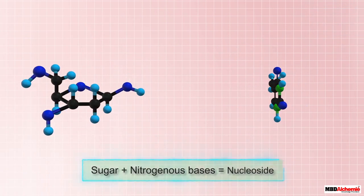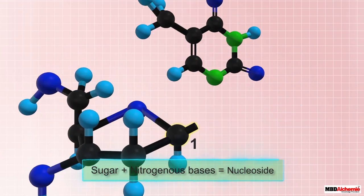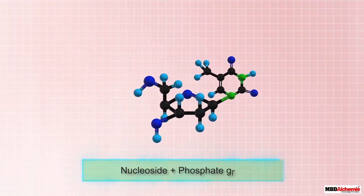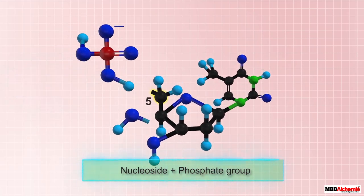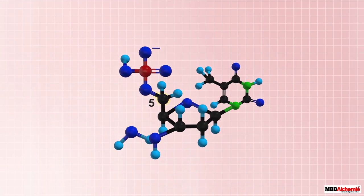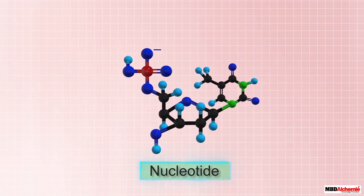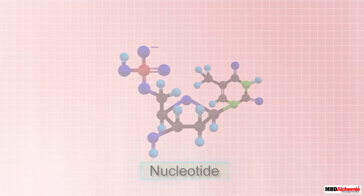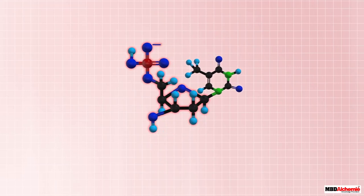The nitrogenous base is a nitrogen-containing heterocyclic compound that can be adenine, guanine, cytosine, or thymine. When any of these nitrogenous bases attaches to the first carbon of the sugar, a nucleoside is formed. A phosphate group then adds to the fifth carbon of the sugar to form a nucleotide, uniting the three components.